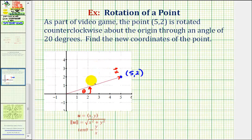We first have to find the magnitude of this vector and the direction given by theta. The magnitude of vector u equals the square root of 5 squared plus 2 squared. So the magnitude of u equals the square root of 25 plus 4, or √29.